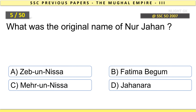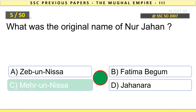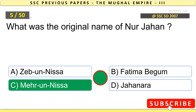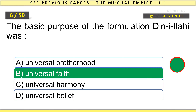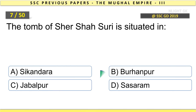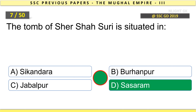What was the original name of Nurjahan? Mehran Nissa. The basic purpose of the formulation Din-e-Ilahi was Universal Faith. The tomb of Sher Shah Suri is situated in Sasaram.